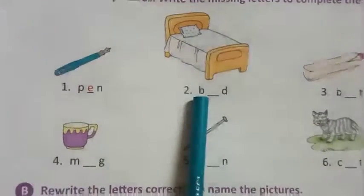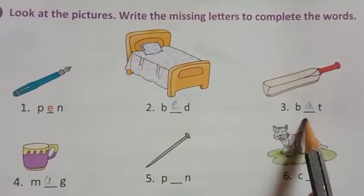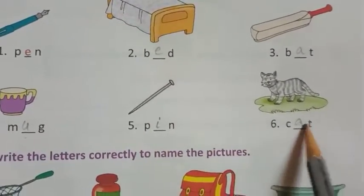Next one is bed: B, E, D - bed. See? Bat: B, A, T - bat. Next one is mug: M, U, G - mug. Next one is pin: P, I, N - pin. Cat: C, A, T - cat.